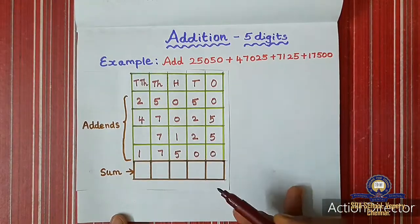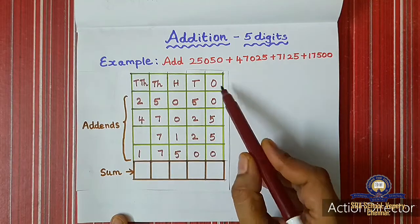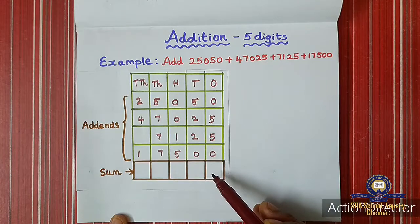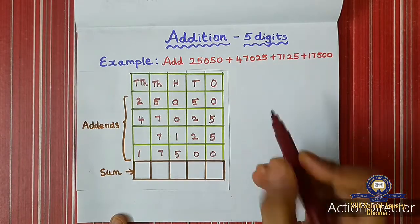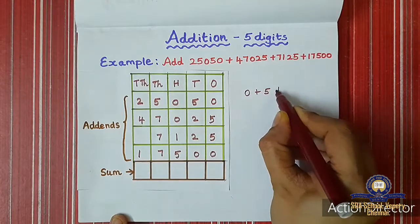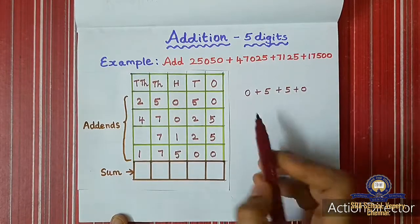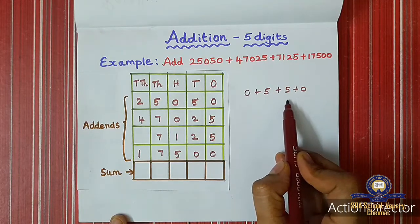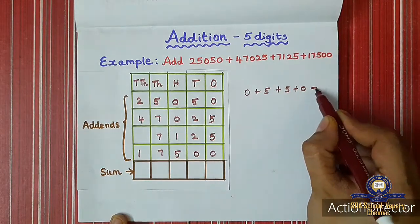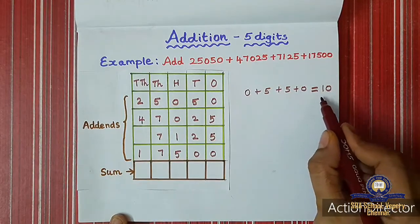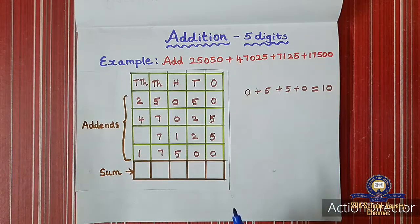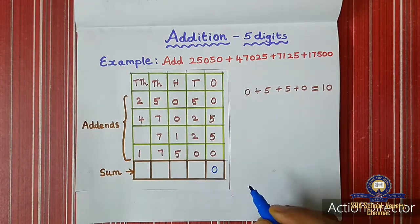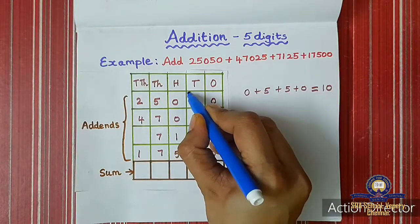Now shall we add the numbers? Every time when adding, we should start from the ones digit. In ones: 0 plus 5 plus 5 plus 5 plus 0. That gives us 15 — wait, 5 plus 5 is 10, plus 5 is 15 — actually the ones total is 10. So we write 0 in the ones place and carry 1 to the tens place.